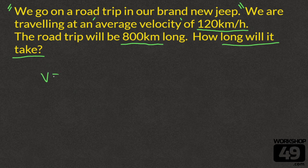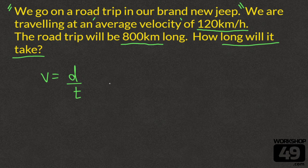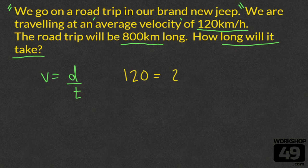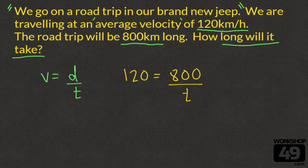So we write out our equation v equals d over t. We're going to fill into our equation what we know. We know the velocity, that's 120. This is going to equal our distance, that's 800, and it's going to be divided by our time. Oh no, what have you done to us? Why did you put a variable into the denominator? Do you not like us?